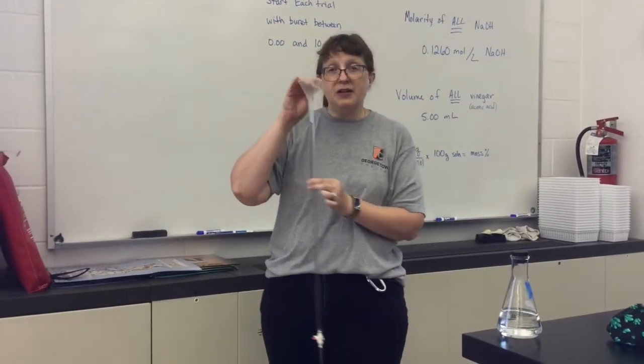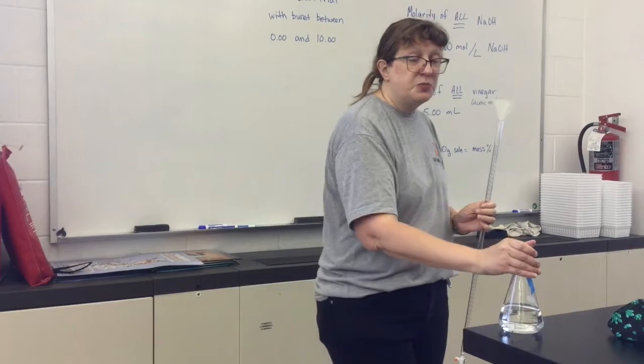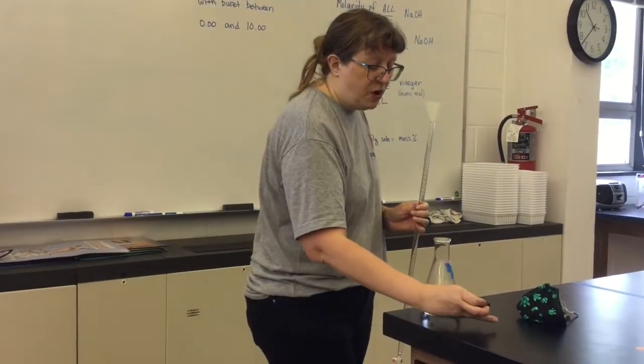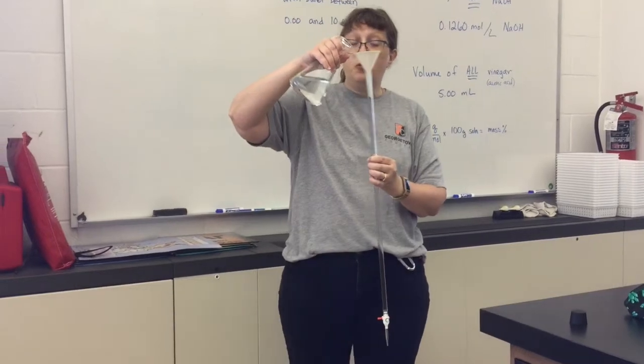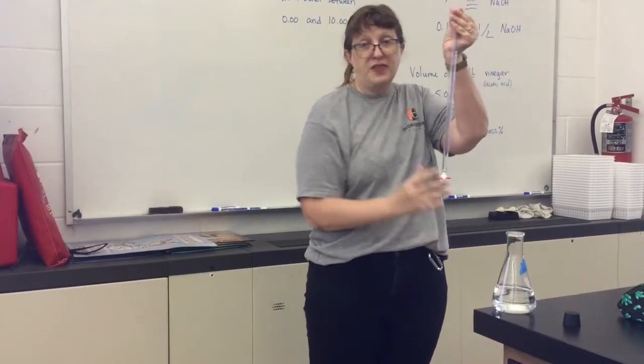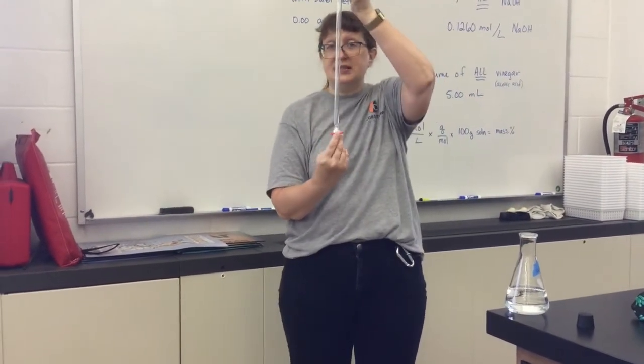Place a funnel in the top of the burette and then just put a few milliliters from your flask into the burette. Now before you pour, you're going to want to make sure that that stopcock is closed. It needs to be horizontal.